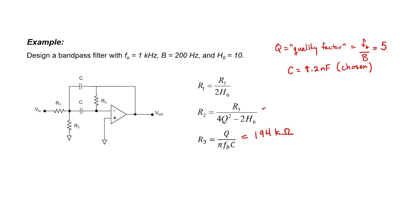We can choose a standard 196 kilohm resistor with 1% tolerance, for example. Knowing R3, we can then plug it into the equation for R2, since we already know the quality factor Q and the DC gain. R2 turns out to be 2.427 kilohms — we could choose a 2.43 kilohm resistor, for example. And then finally, we can calculate R1, which turns out to be 9.707 kilohms — we could choose, for example, a resistor of 9.76 kilohms. This completes the design of this Deliyannis-Friend bandpass filter.